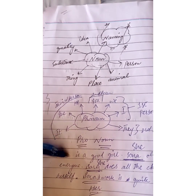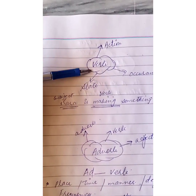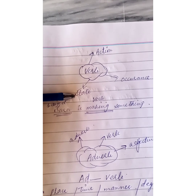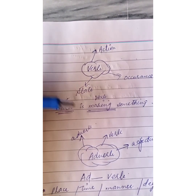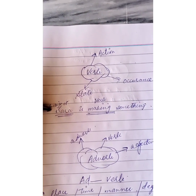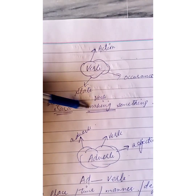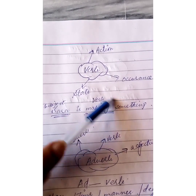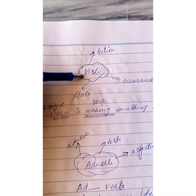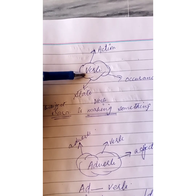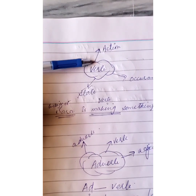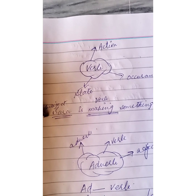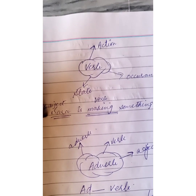The next part of speech is verb. Verb is actually an action word — it is an occurrence or state. Almost every sentence has a verb in it, and the verb tells us what the subject is doing. For example, 'Sarah is making something' — Sarah is the subject, and 'making' is the verb. There are three forms of verbs: first form, second form, and third form. Verbs can also be transitive or intransitive. Any action, state, or occurrence — such as play, sing, eat, speak — is called a verb.